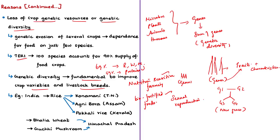The authors note that India is the center of origin for rice, brinjal, citrus, banana and cucumber species. According to the authors, over 811 cultivated plants and 902 of their wild relatives have been documented in India. Certain examples mentioned include the Konamani rice from Tamil Nadu, the Agnibora rice from Assam, the Pokali rice from Kerala, the Bhalia wheat from Himachal Pradesh, and Gucci mushroom from Himachal Pradesh — these are examples of genetic resources from India.